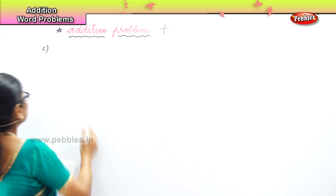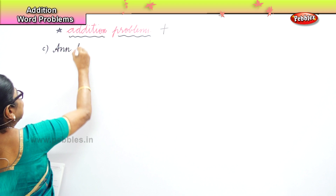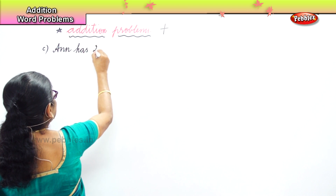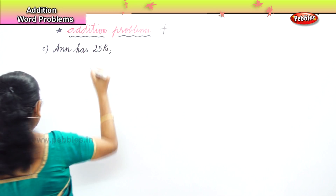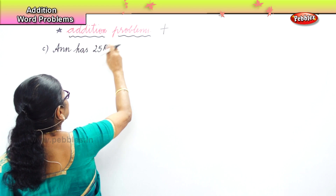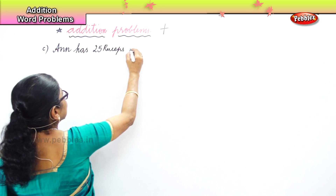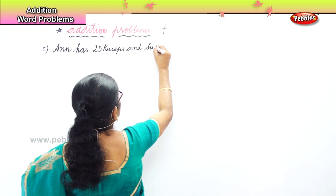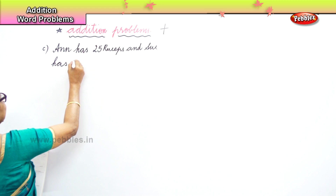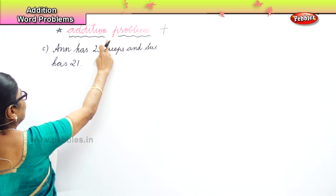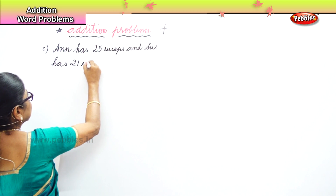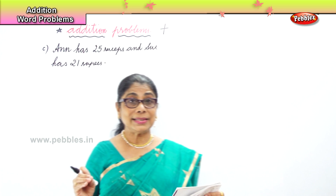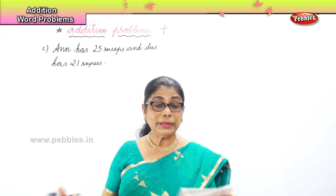Anne has 25 rupees — she has collected 25 rupees. And Sue has 21 rupees. So Anne has 25 and Sue has 21 rupees. Now the question is: what is the sum of rupees they have?